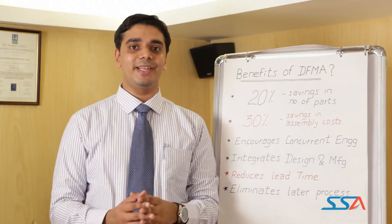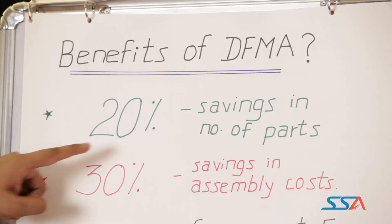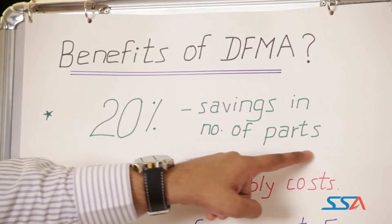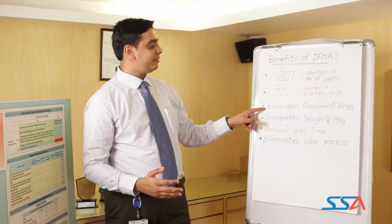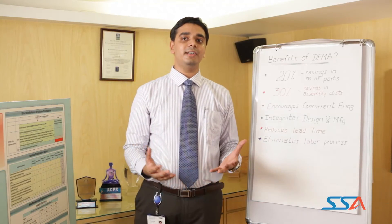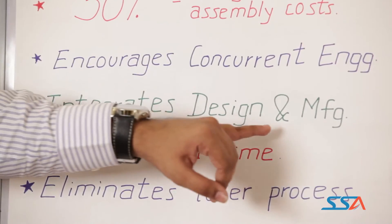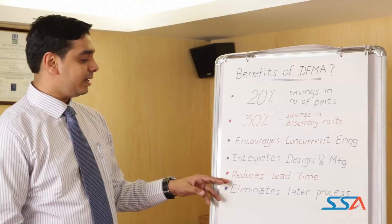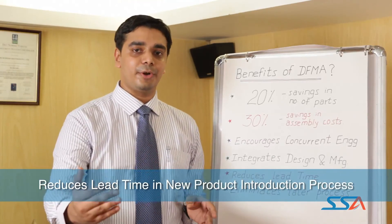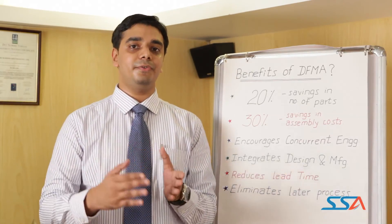Now coming to the most important part of DFMA — the benefits. We have applied DFMA across many products in various industries, and our experience shows that we have reduced around 20% of the number of parts in a product and achieved around 30% savings in the cost of the product. DFMA encourages concurrent engineering, which is a cross-functional team working together on a product design. DFMA also integrates the design and manufacturing aspects of the product, reducing lead time in the new product introduction process and eliminating problems that would have otherwise occurred later.